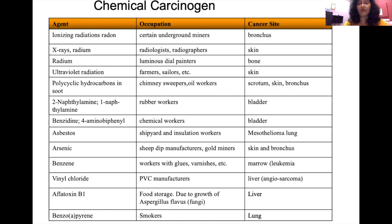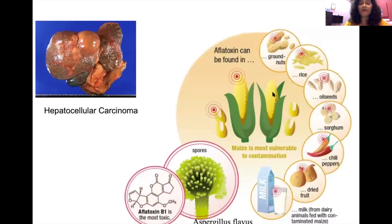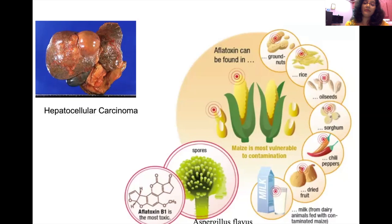Aflatoxin B1 is found in stored food — when food is stored in damp conditions, there is increased growth of Aspergillus flavus, which contains aflatoxin B1. It is found in groundnuts, rice, oil seeds, dried nuts, and milk (since Aspergillus flavus is found in cattle fodder and can enter through milk). It may lead to hepatocellular carcinoma.